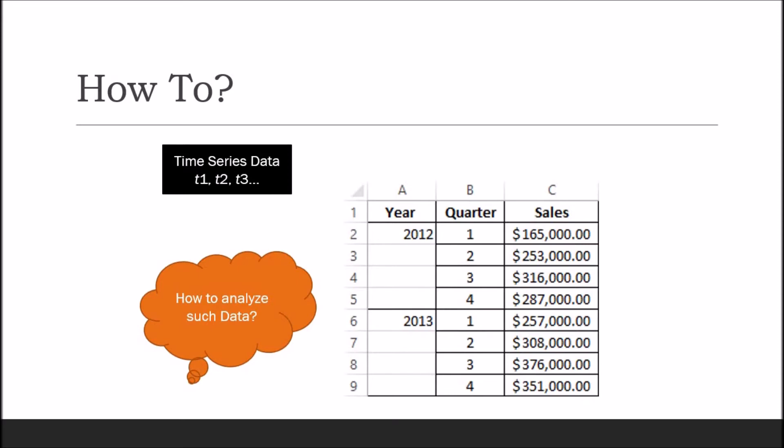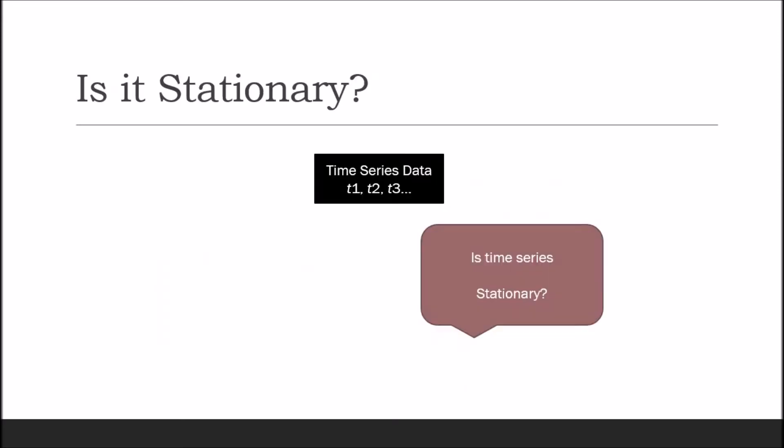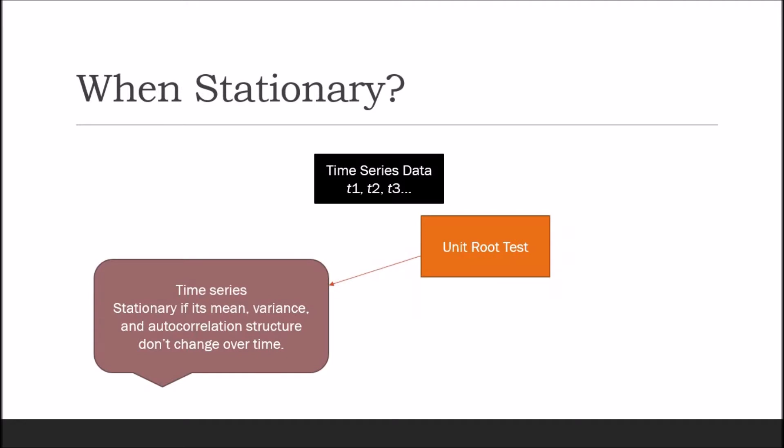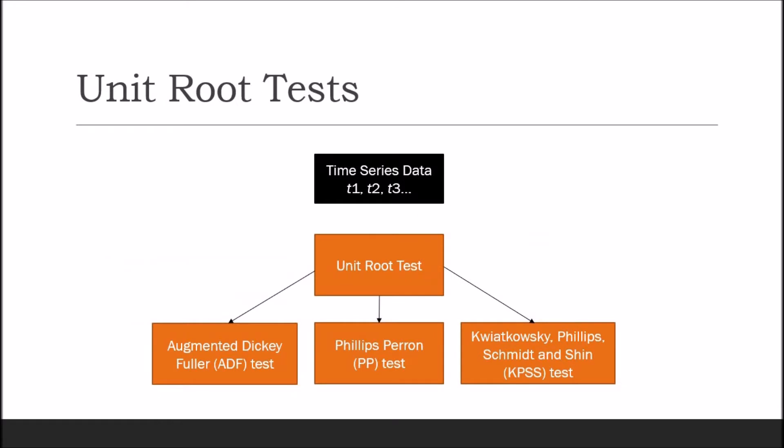The question is how to analyze the time series data. The first step is to test whether your time series is stationary or not. To test this, you have to conduct unit root tests. A stationary time series is one whose mean, variance, and autocorrelation function do not change over time. Three types of unit root tests are available: the Augmented Dickey-Fuller test, the Phillips-Perron test, and the Kwiatkowski-Phillips-Schmidt-Shin KPSS test.